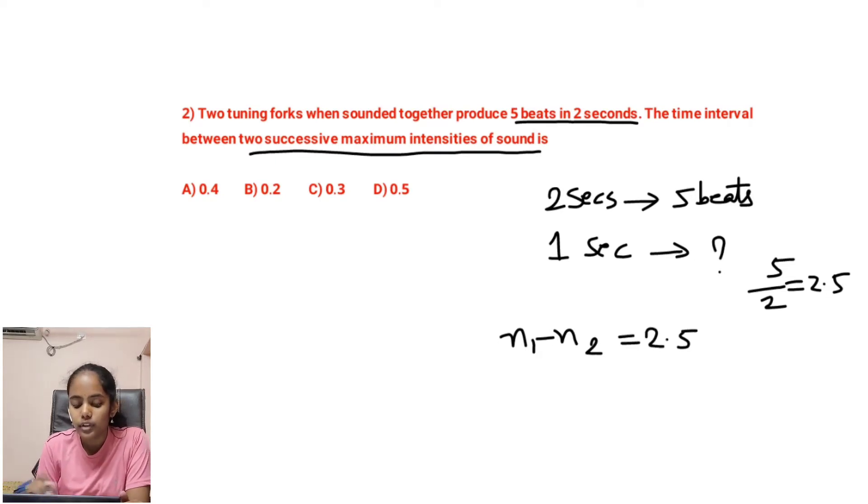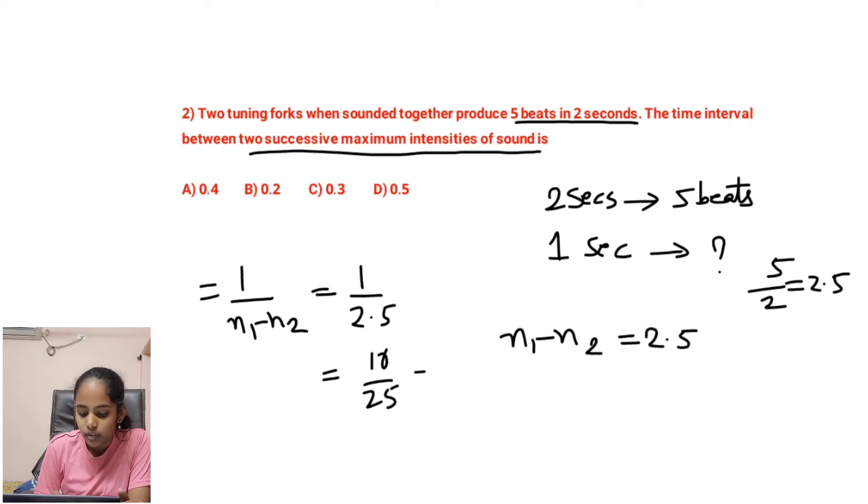The formula for time interval between 2 successive maximum intensities of sound is 1 by (n₁ minus n₂). So 1 by 2.5, that is equal to 10 by 25, that is equal to 2 by 5. 2 by 5 equals 0.4. So our option will become A.